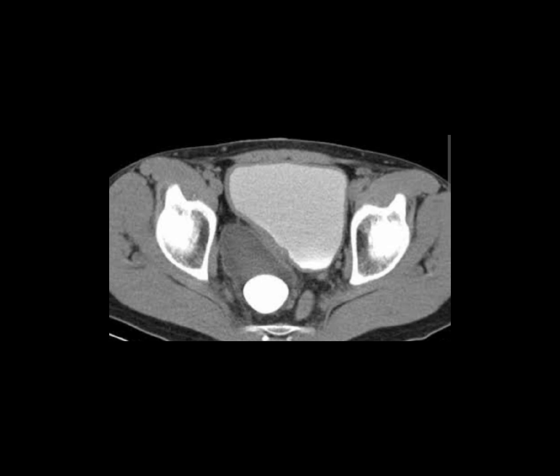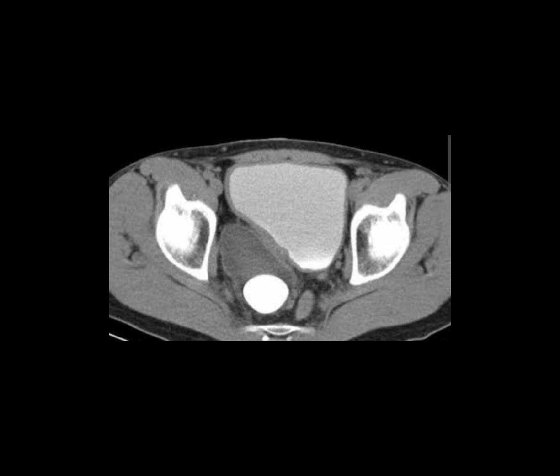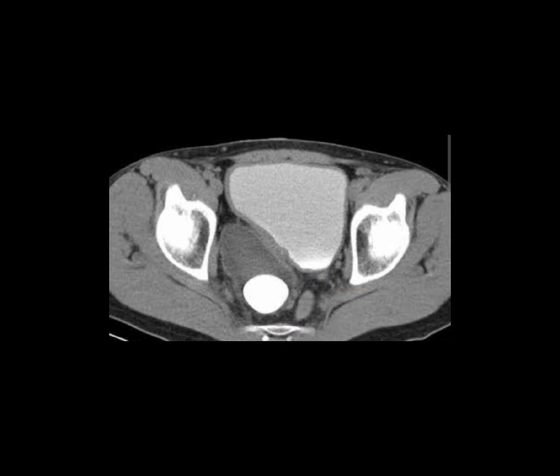Here we can see a CT examination of the pelvis. On post contrast study we can see contrast within the urinary bladder, while a prominent sized diverticula is noted along the right posterolateral aspect of the urinary bladder, which shows a well-defined secondary stone in it. We cannot see contrast in this diverticula.